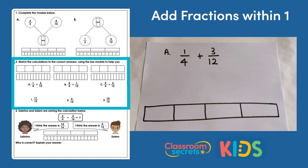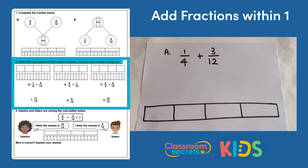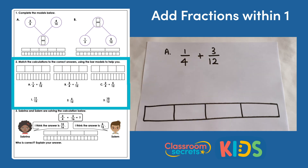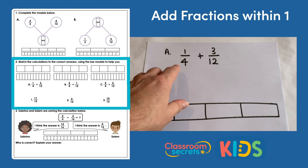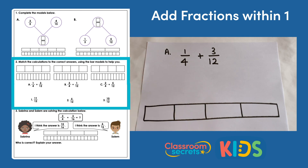Question two says match the calculations to the correct answers using the bar models to help you. We have A here which is one quarter and three twelfths, and we have three possible results: one could be eleven twelfths, two is six twelfths, and three is ten twelfths. Let's have a look at this calculation and see which of those results we make.